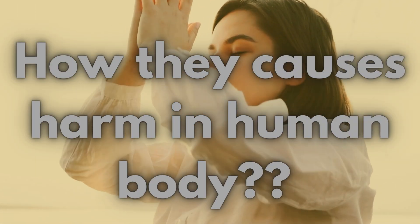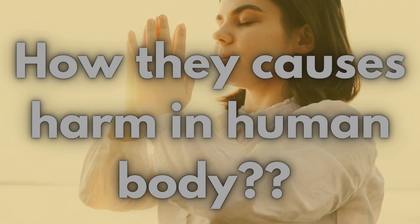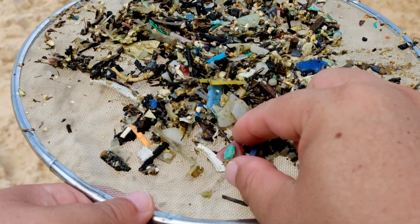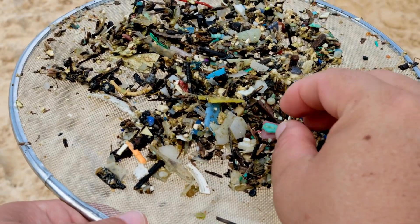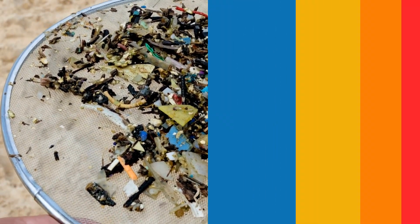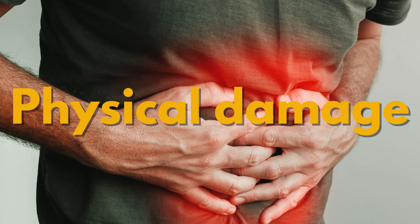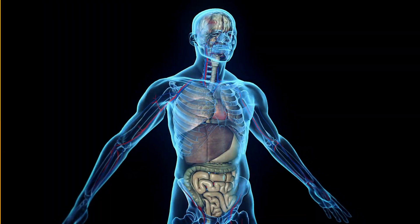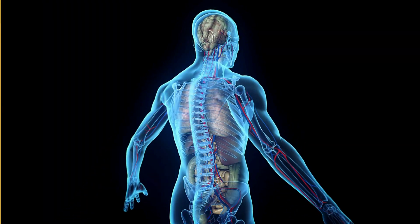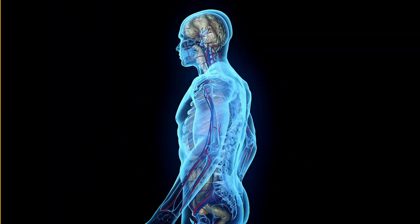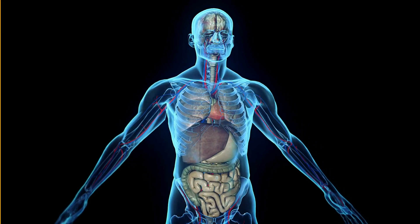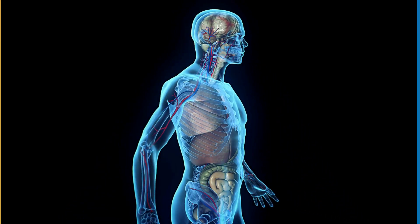How microplastics cause harm in the body: once ingested, microplastics can potentially cause harm through several mechanisms. Physical damage: microplastics can cause inflammation or damage to tissues in the digestive tract, lungs, or other organs due to their small size and sharp edges.